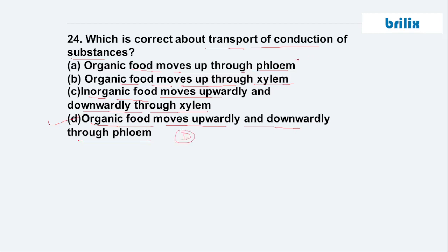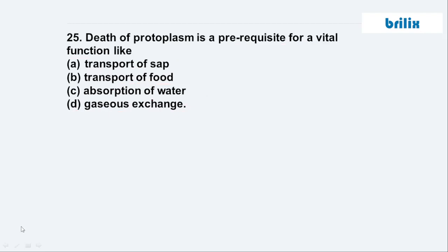Question 25: Death of protoplasm is a prerequisite for vital functions. Where is it necessary that the whole protoplasm should be dead? It is necessary for the transport of sap. The very first option is correct, because to make the space we need to have dead protoplasm.